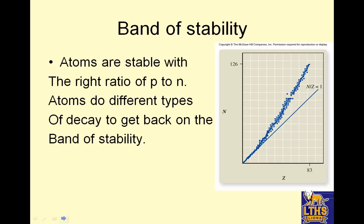Band of stability. Atoms are stable with the right ratio of protons to neutrons. This is a graph of N is neutrons and Z is protons. If you're on this band, called the band of stability, you're stable. Okay? So if you're on that little blue guy right there, that line does nothing at all. Okay?